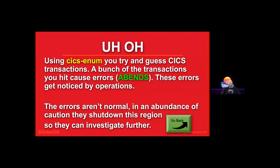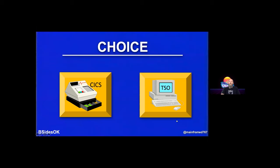Looks like this talk is going to end early. Using CICS-enum, you try to guess CICS transactions, and a bunch of them cause errors — called abends in CICS. These errors get noticed by operations, and when they see a bunch of abnormal abends, instead of investigating, they decide to just shut CICS down. So CICS is now blocked off from us.